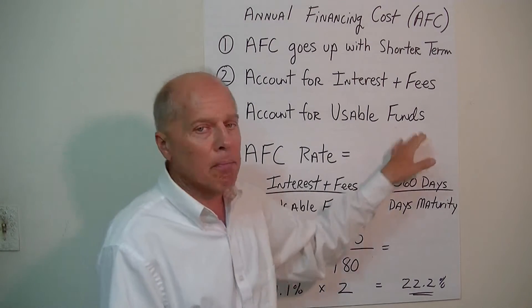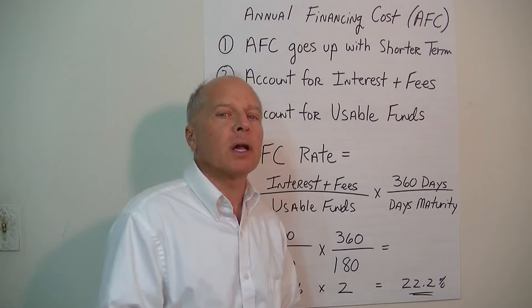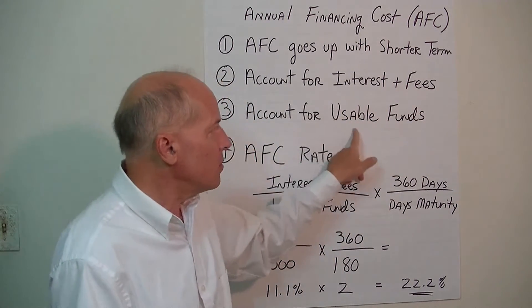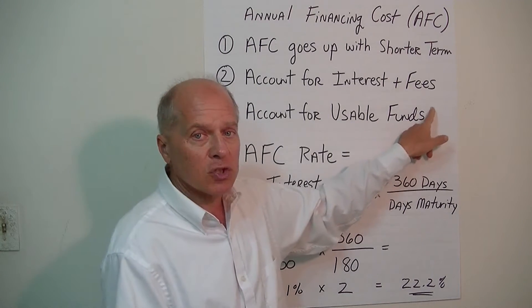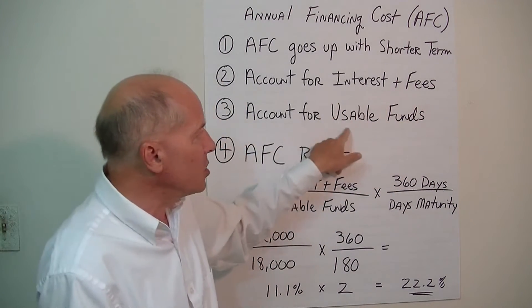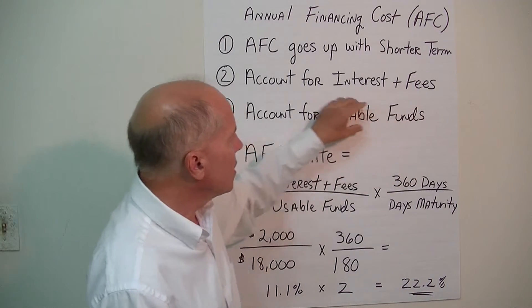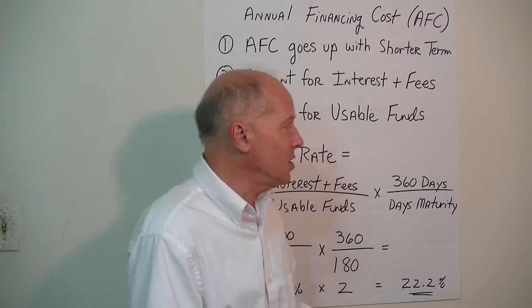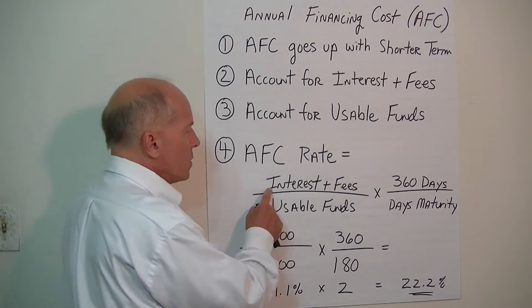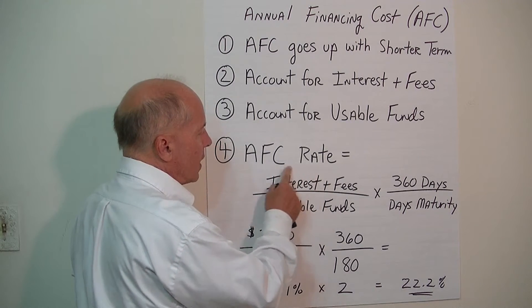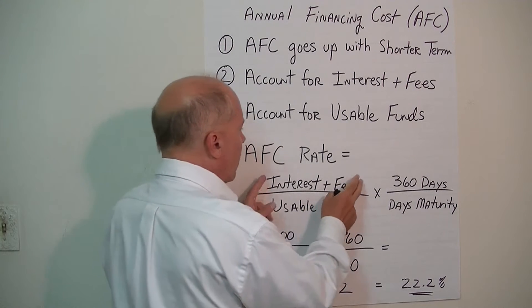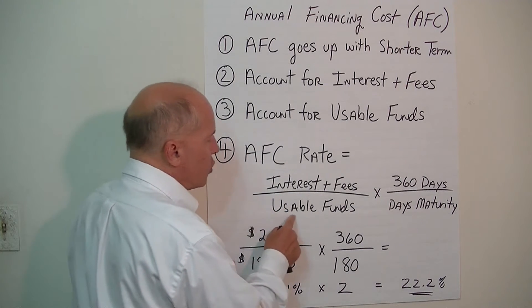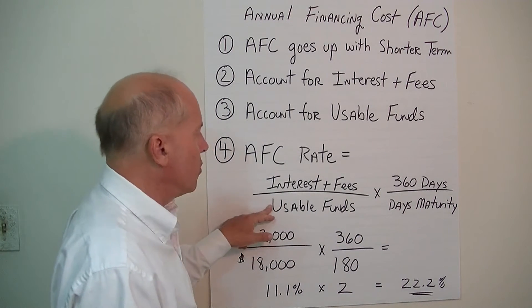When the bank actually gives us the money, we want to account for how much money is actually deposited in our checking account — what we have use of. If there are some type of restrictions or less money dispersed, we'll take that into account as well. So we take into account the interest, which is the primary financing cost, plus any fees — we add them all up and divide them by the usable funds that the bank gives us under the loan agreement.